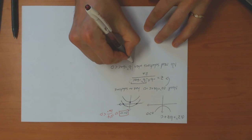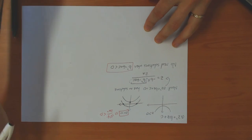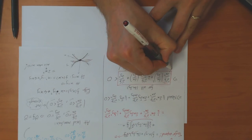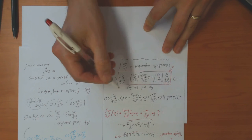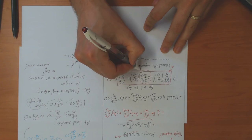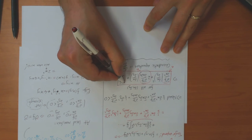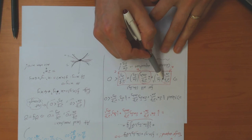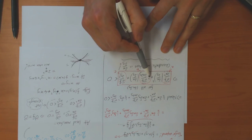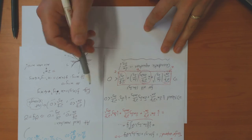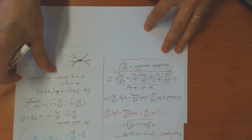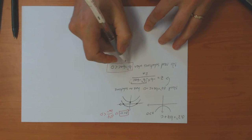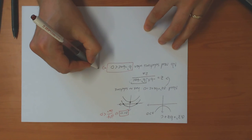The quadratic formula gives solutions z = (−b ± √(b²−4ac)) / 2a. There are no real solutions when b² − 4ac < 0, since then the square root is imaginary. In our quadratic, a = d²f/dx², b = 2·d²f/dxdy, and c = d²f/dy².